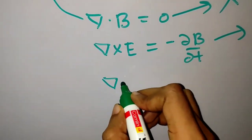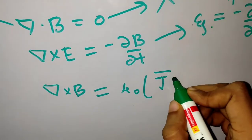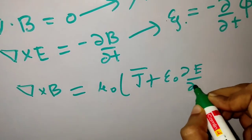The last one is curl of B, probably the most revolutionary one—the modified Ampere's law: mu naught J plus epsilon naught del E del T.